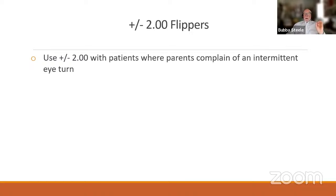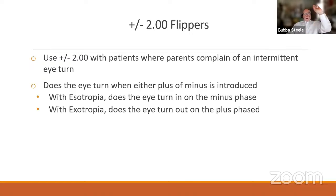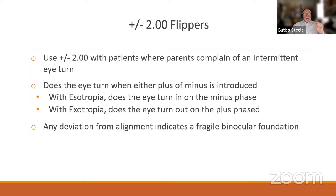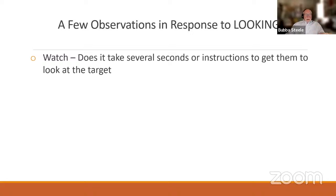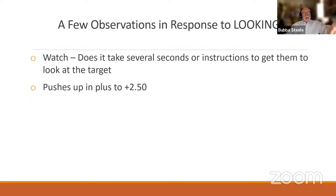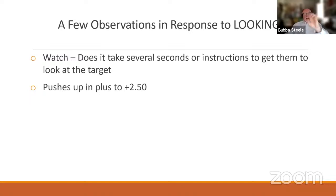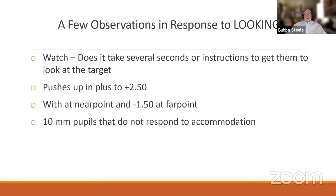I also use plus and minus 2 where parents complain of intermittent eye turn but you don't see it in the office. When I put the plus in front, I may see the eye turn out on an exotrope, or in on an esotrope. Any deviation from alignment when flipping lenses indicates a fragile binocular system. If you keep adding plus up to plus 2.50 and they still haven't broken down, you might need to proceed to dilation. I tell students: if you get to dilation and you don't know where that patient is going, they're going to blow up on you.